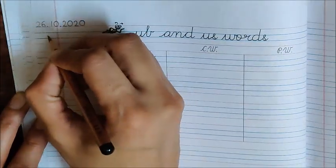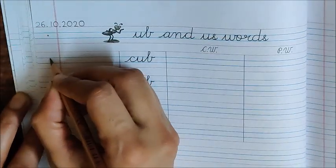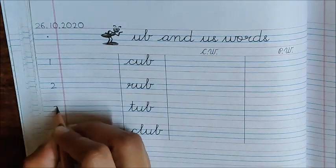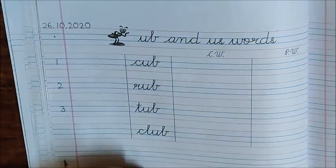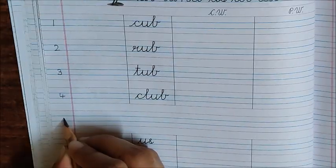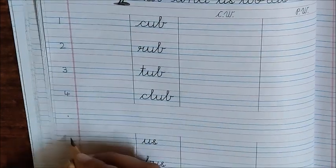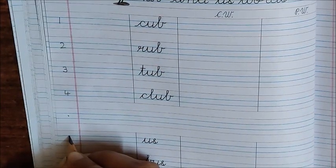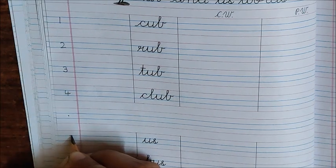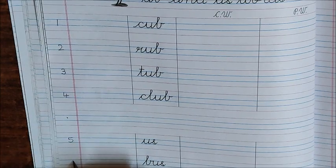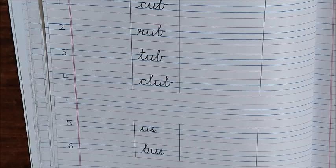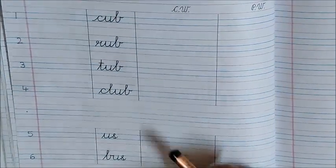Now children, put a dot here and below write down 1, 2, 3, 4. Below 4, put a dot. We do not have any word here. Now below this dot, write down the next number. What comes after 4 children? 5. So write 5 here and 6 here. We have 6 words on this page.